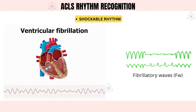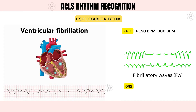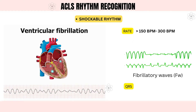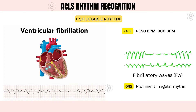VF is a chaotic rhythm and the ventricular rate is often more than 150 to 300, sometimes even 500. The QRS morphology of VF varies in shape, amplitude, and duration, which produces a prominently irregular rhythm. Both VT and VF prevent the heart from delivering blood to the body's vital organs.